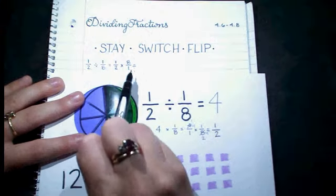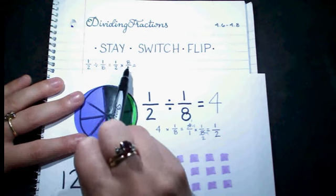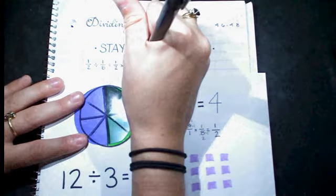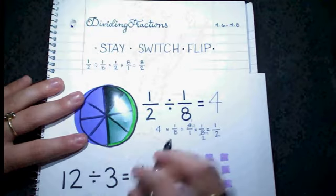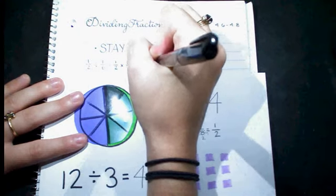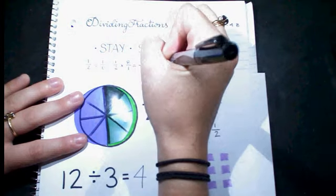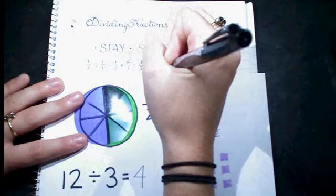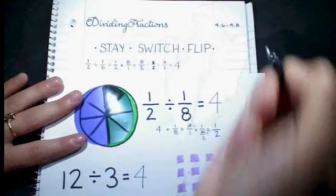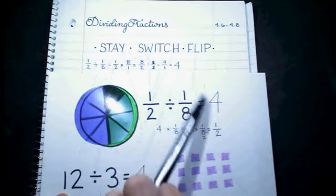I can either choose to cross reduce or simplify at the end. I'm going to simplify at the end this time. 1 times 8 is 8, 2 times 1 is 2. I can see I can divide both by 2: 8 divided by 2 is 4, 2 divided by 2 is 1. And since my answer is over 1, I can simplify that to just 4. So the stay-switch-flip method gives me the correct answer.